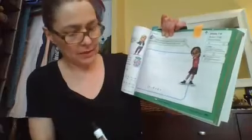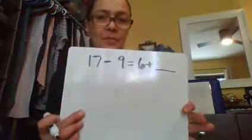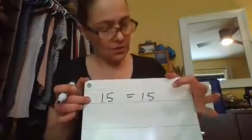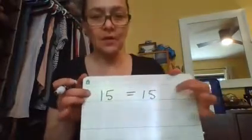So we have 17 minus 9 equals 6 plus blank. Okay? So before we solve and go into that I want you to think about what I just said about making sure that what's on one side is equal to the other. So the values are the same.